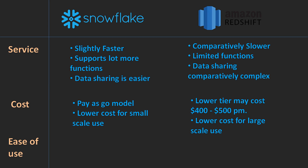For ease of use, Snowflake has a clear advantage. Snowflake is very easy to use as a data warehouse and is really intuitive. Amazon Redshift has a slight learning curve — it might take you two to three weeks to get adjusted to it as a beginner.